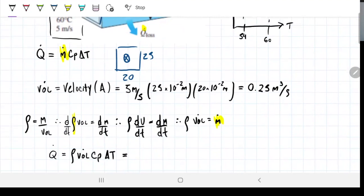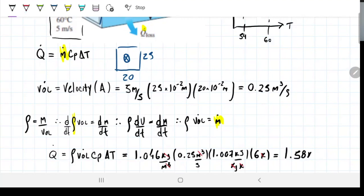So our Q loss will be density times the volume flow rate times the CP times the delta T. And guess what? We have everything. We have density, 1.046 kilograms per meters cubed. We have the volume flow rate, which is 0.25. We have CP, 1.007. And we have the difference in temperature, which is 6 Kelvin or Celsius, being a difference in temperature. My Kelvin goes away, meters cubed go away, my kilograms go away, and I'm left with kilojoules per second, which is the same thing as watts. And I get 1.58 kilojoules per second or kilowatts.